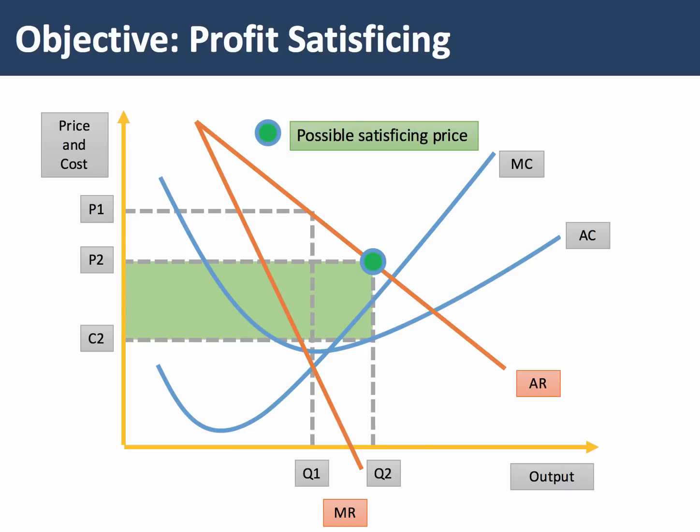Another alternative is to satisfice. There's no unique satisficing output. Q1 is the profit maximising level of production. Q2 is a level of output which is higher, with a lower price P2 compared to P1. The firm is still making some profit, but the profit area is lower than it would be if they produced at Q1. So satisficing involves some sacrifice of total profit, but links to other aspects such as market share and managerial objectives — for example, the size of bonuses and job security.